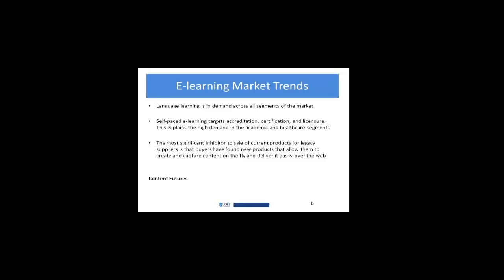Self-paced e-learning targeting content creation, certification, and licensure — this is where there's a trend in growth. That's why you see a lot of growth in academic online learning as well as in healthcare, where there are licensure requirements. I've put a link here to a content futures clip — it's a very interesting video that speaks to the nature of content and where it's going and how that impacts where we might be going with online learning. I'd encourage you to take a look at that.